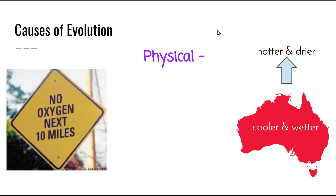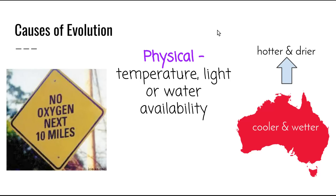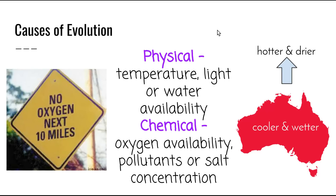Environmental changes can be physical, such as temperature, light, or water availability, or they can also be chemical, such as changes in oxygen availability, pollutants, or salt concentration.